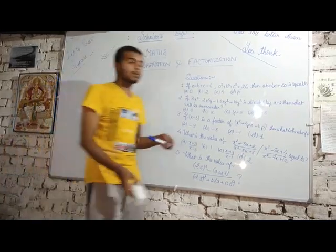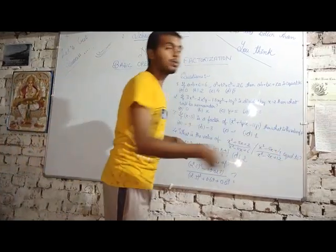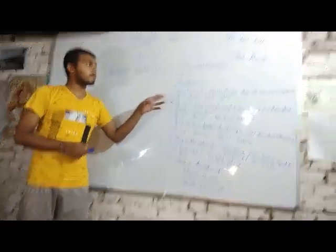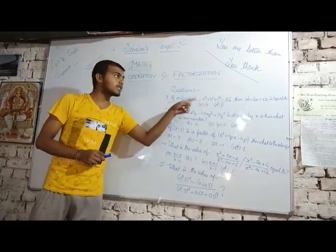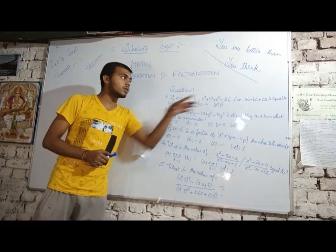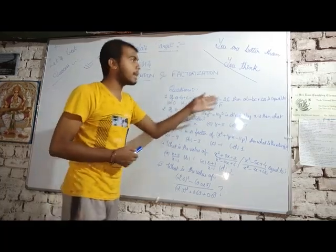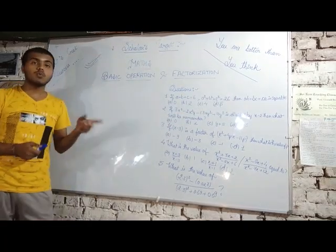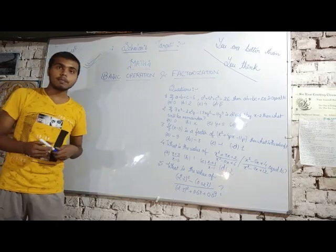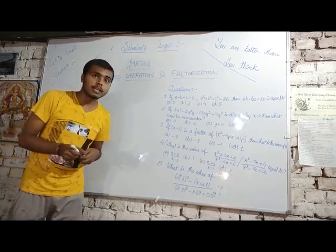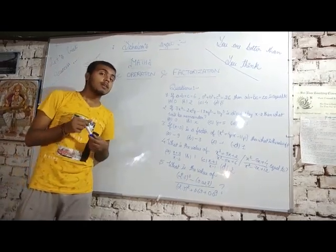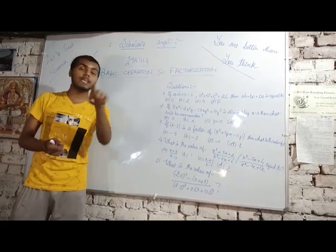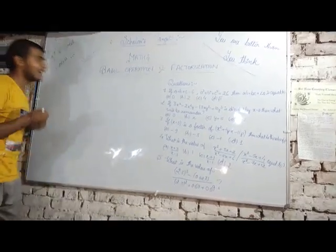Here I have written some questions. See: if a + b + c = 6 and a² + b² + c² = 26, then what is ab + bc + ca equal to? What will be the answer? Can anyone guess? Please write in the comment section.